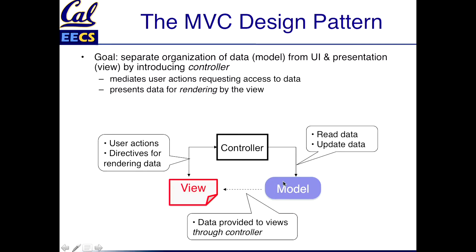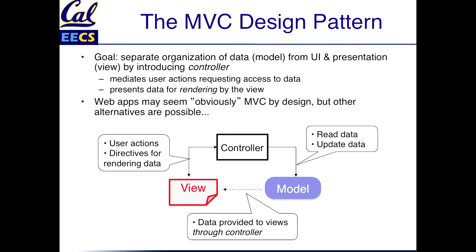In our case, the model can read and update data that's maintained by the application. That data is indirectly provided to the view, but it all happens through the controller. The controller is also how users who are looking at the view can interact with it. For example, in the case of the web, the view is a page you're viewing in a browser, with affordances like clicking on things and submitting forms. It seems like this would be an obvious way to structure web applications, but other alternatives are possible, and most web frameworks don't necessarily follow this pattern.